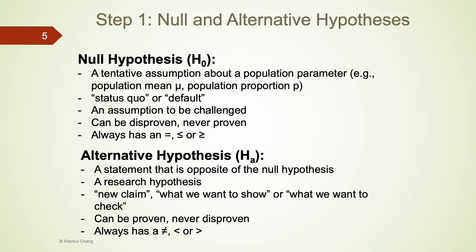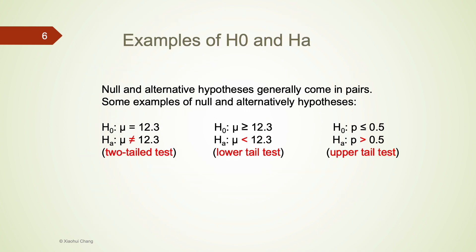The null and the alternative are mutually exclusive. Here are some examples of H0 and HA. H0 is generally placed on top of the alternative hypothesis. Note that all the statements are about the population parameters — for example, mu or population proportion p — not about sample statistics like x-bar or p-bar. The sign of inequality in the alternative determines the type of test. If it is strictly not equal to, it is a two-tailed test. If it is less than, that is a lower-tailed test. If it is strictly greater than, that is called an upper-tailed test.